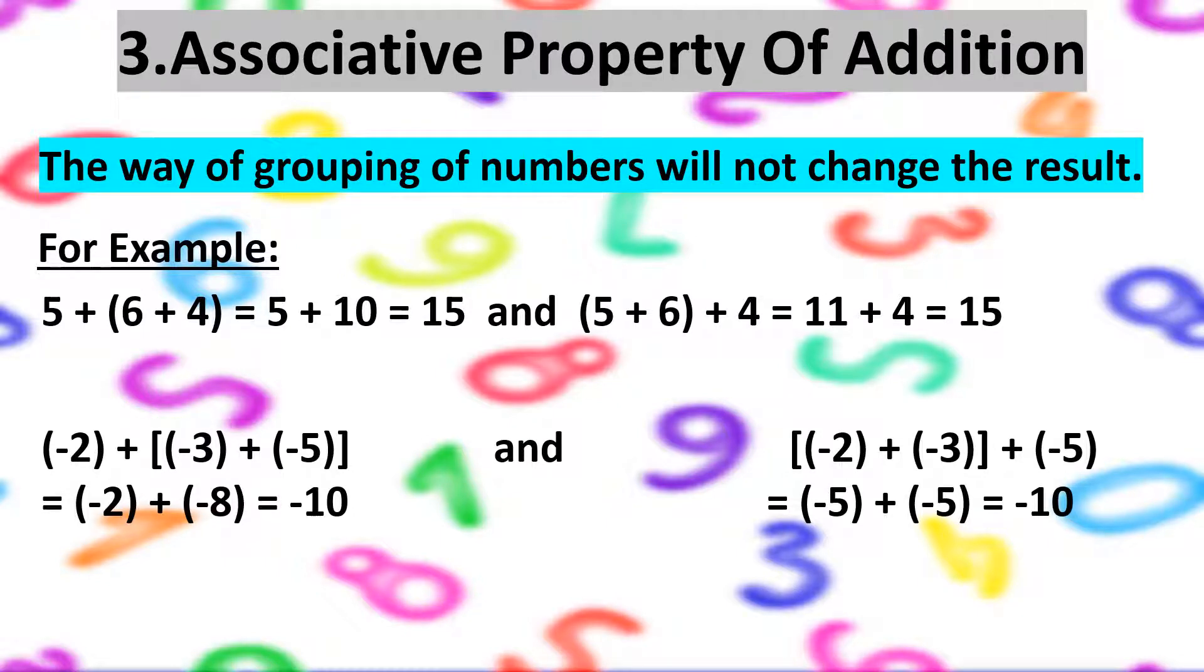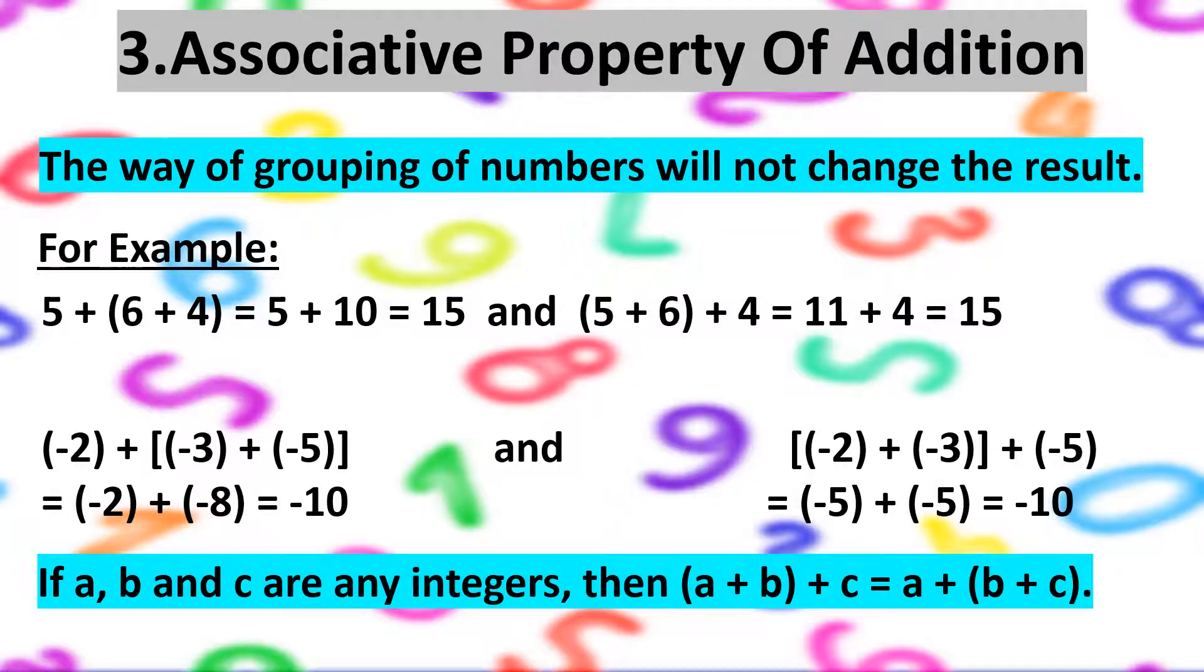So this property clearly tells us that if A, B and C are any integers, then grouping A and B and then adding C will always be equal to grouping of B and C and then adding A.